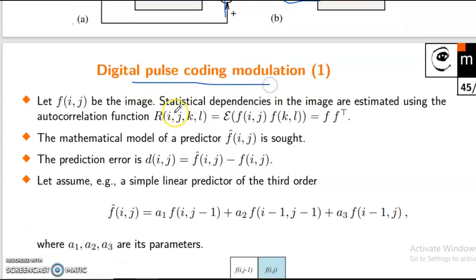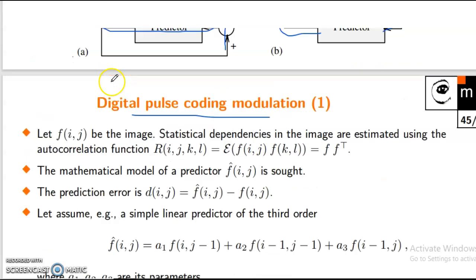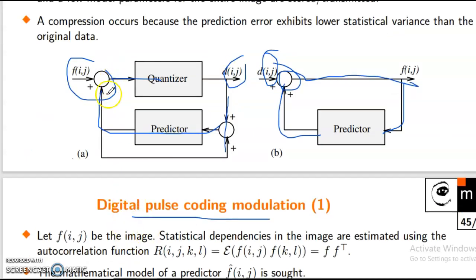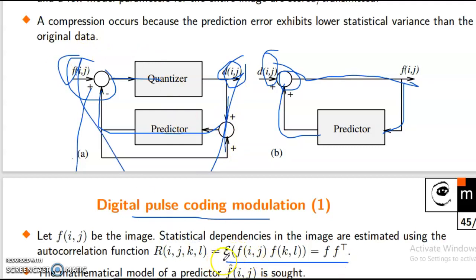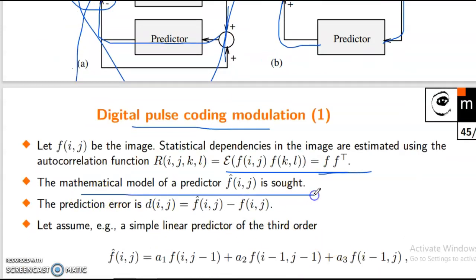Digital pulse coding modulation. Let f(ij) be the image. Statistical dependencies in the image are estimated using the autocorrelation function R of (ij, kl). Autocorrelation: epsilon equals the summation of f(ij) times f(kl), equal to f times f-dash. The mathematical model of f — predictor f-cap of ij.